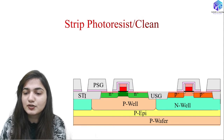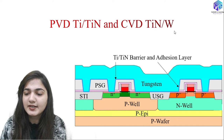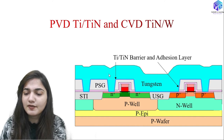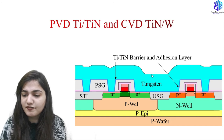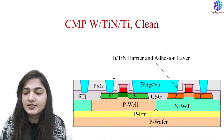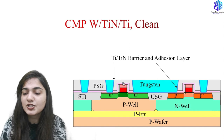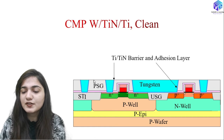All of the steps for local interconnection formation are shown here. First, stripping off the photoresist and cleaning. We form the trenches, then photoresist clean. Then PVD of titanium or titanium nitride and CVD of titanium nitride or tungsten. The titanium nitride acts as an adhesion or barrier layer, and then tungsten is deposited — though it shows a rough surface. This is smoothed with CMP of the tungsten as well as titanium nitride and titanium. The titanium nitride layer is removed from above the surface using CMP, with the endpoint calculated to stop at the right location.